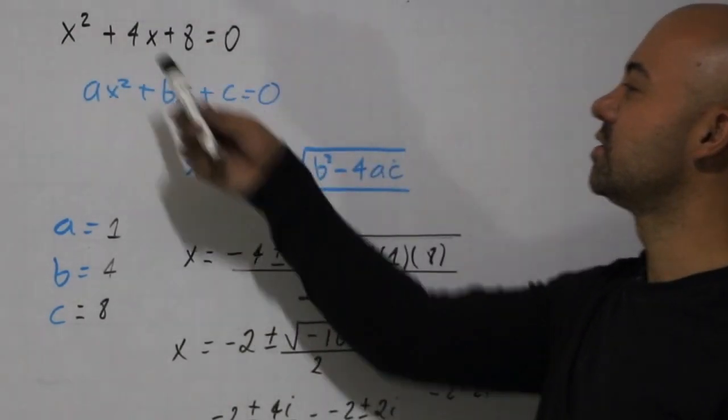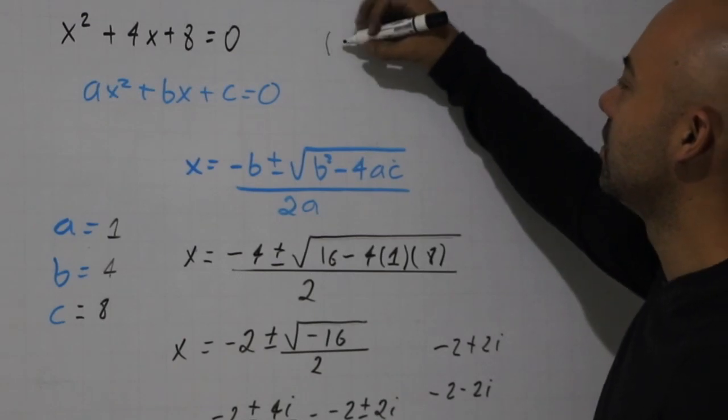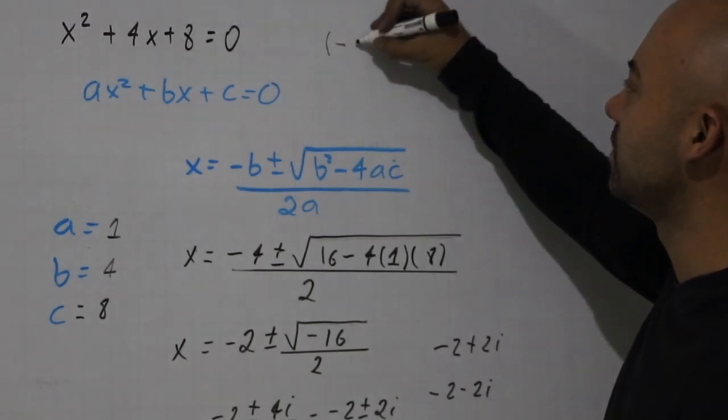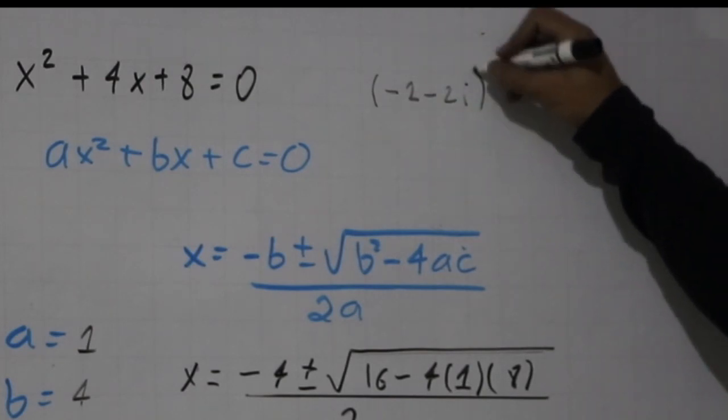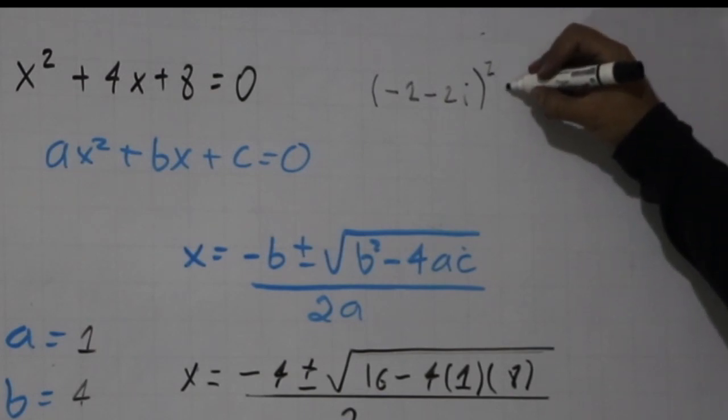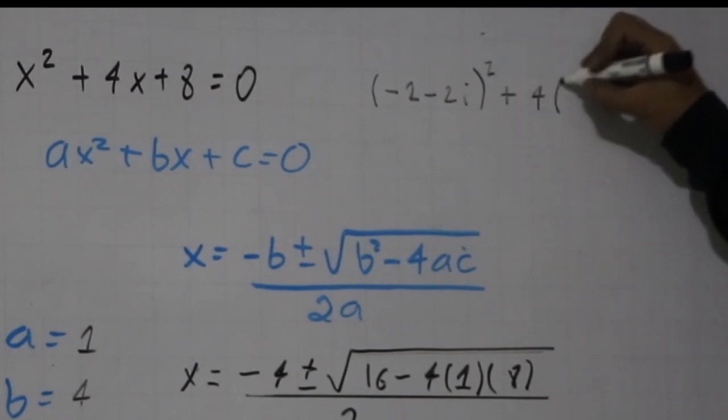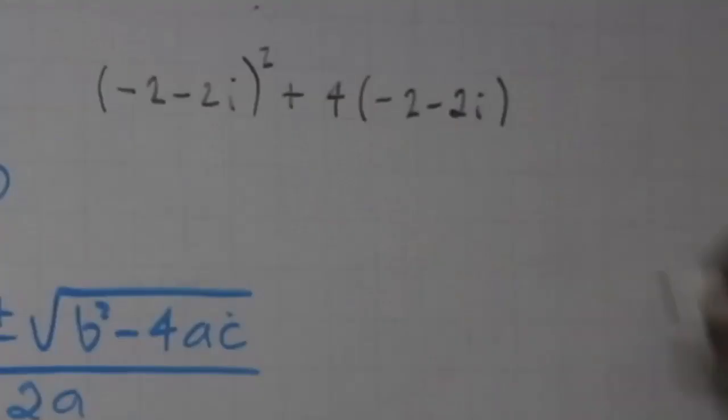I'm going to write this equation, but I'm going to replace the x with the number that we have there. So instead of x, we have (-2 - 2i)² + 4(-2 - 2i) + 8. Now remember, if we have -2, that's like having -1 multiplied by 2, and we have 2 minuses here, so we can factor the number -1.